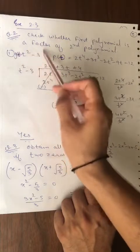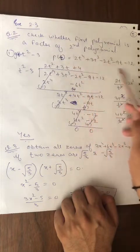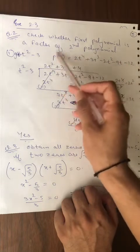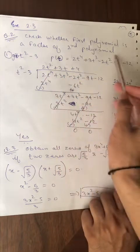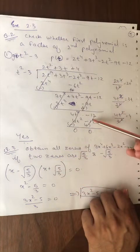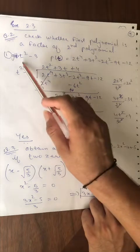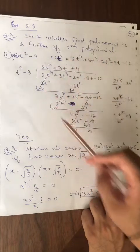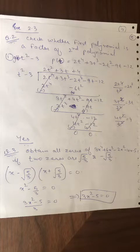The first polynomial g(t) = t² - 3, and p(t) = 2t⁴ + 3t³ - 2t² - 9t - 12. We divide the larger polynomial by the smaller one using the same method. If the remainder is 0, then t² - 3 is a factor of p(t). If remainder is not 0, then it is not a factor. We just need to check whether the remainder is 0 or not.